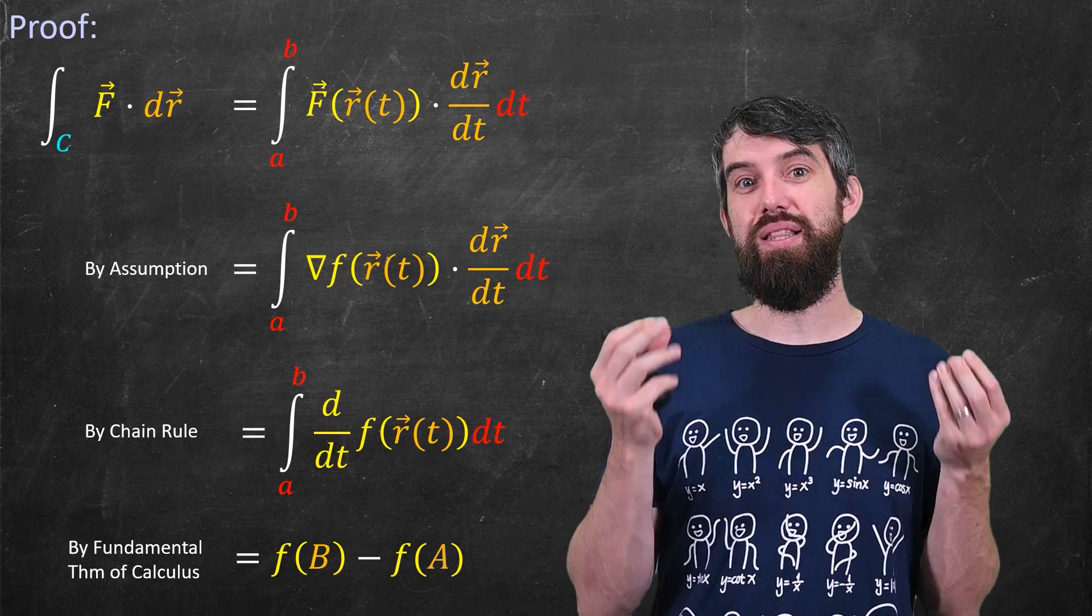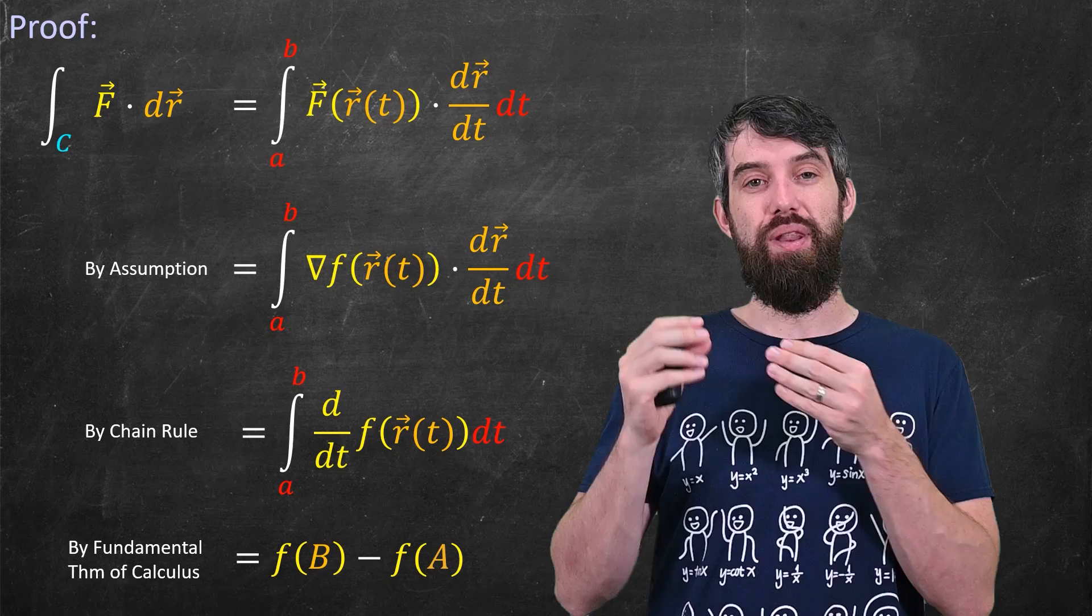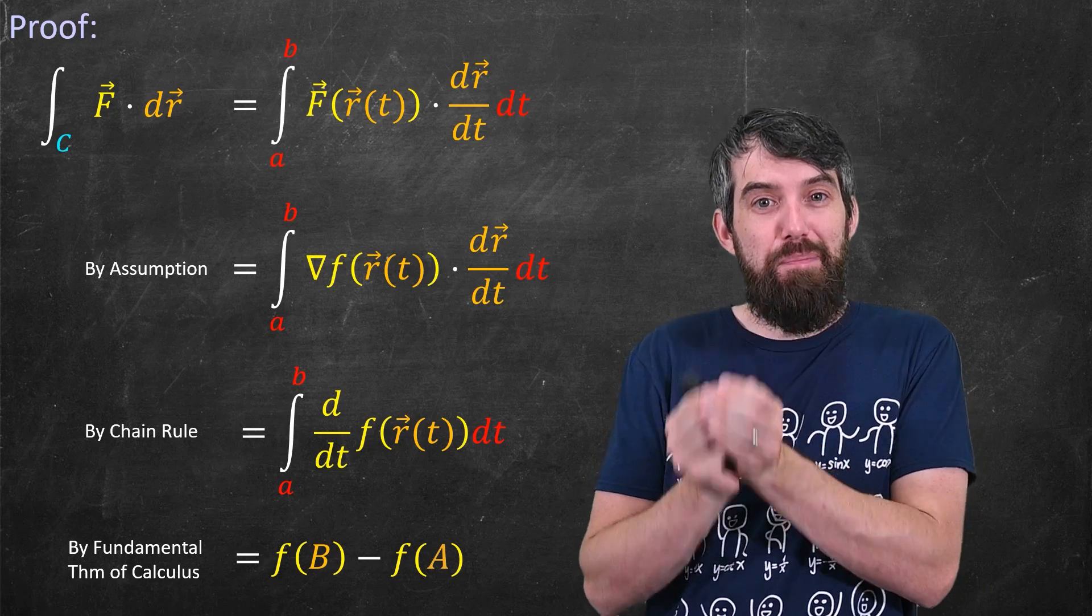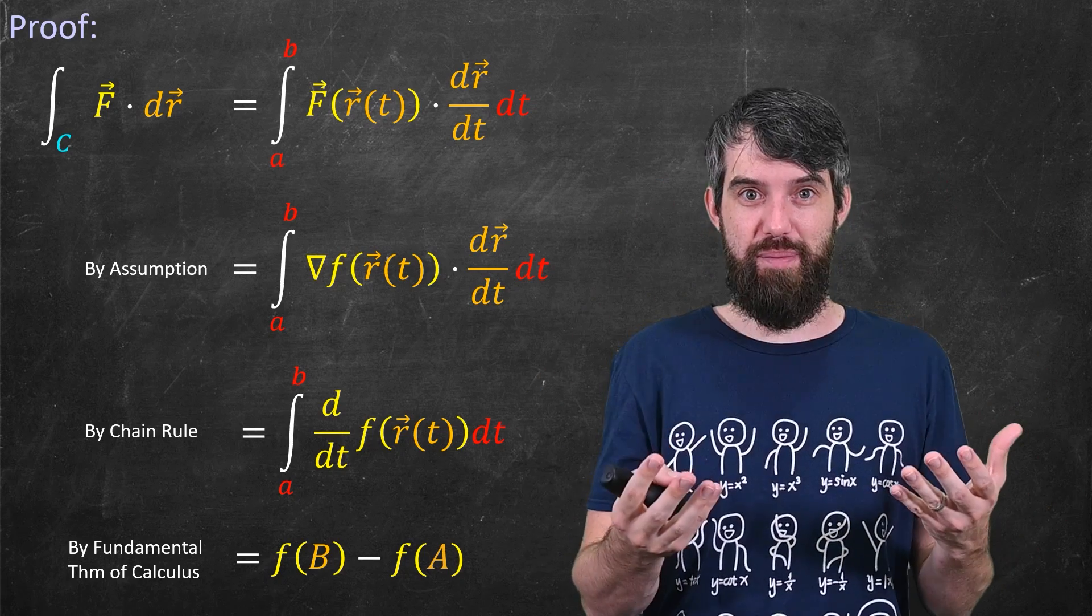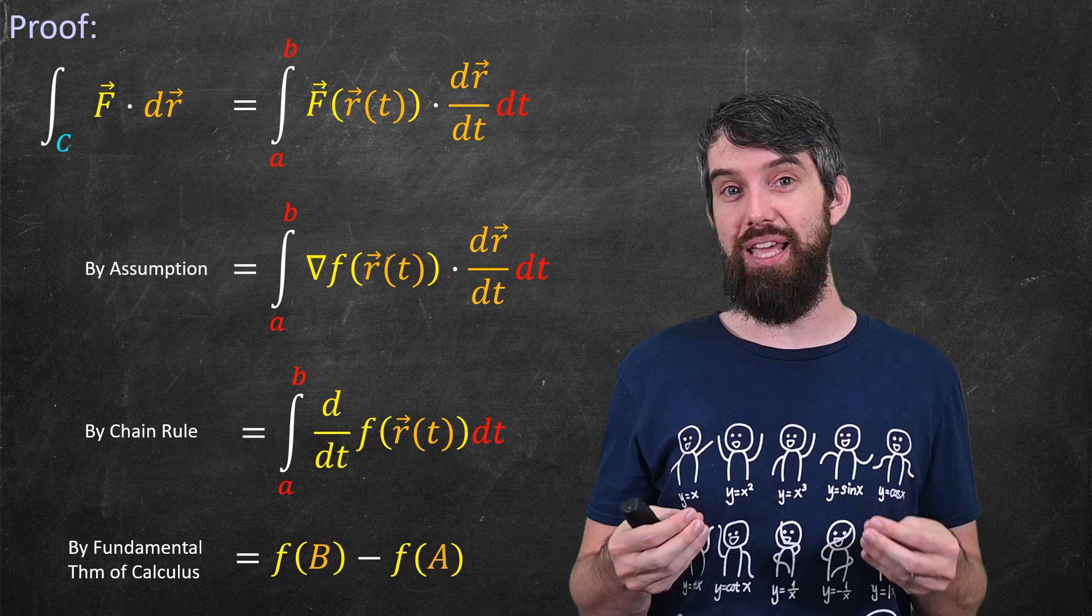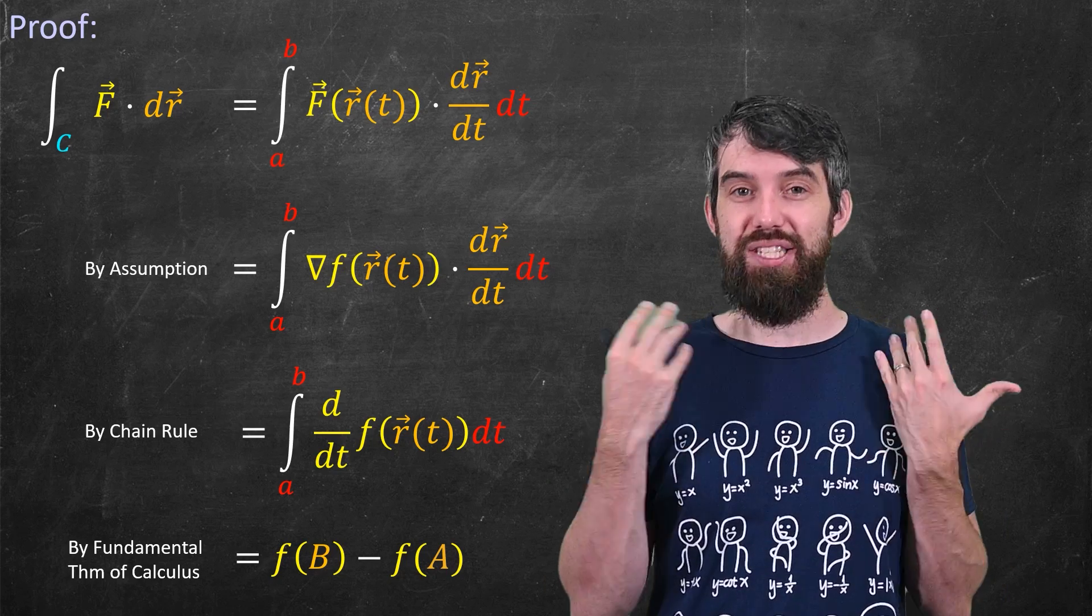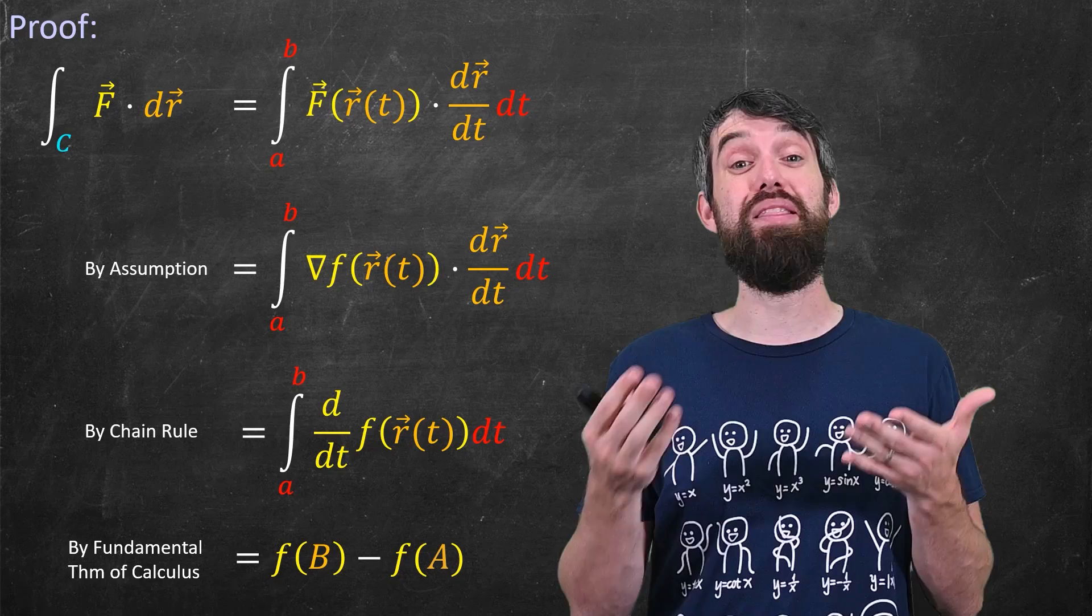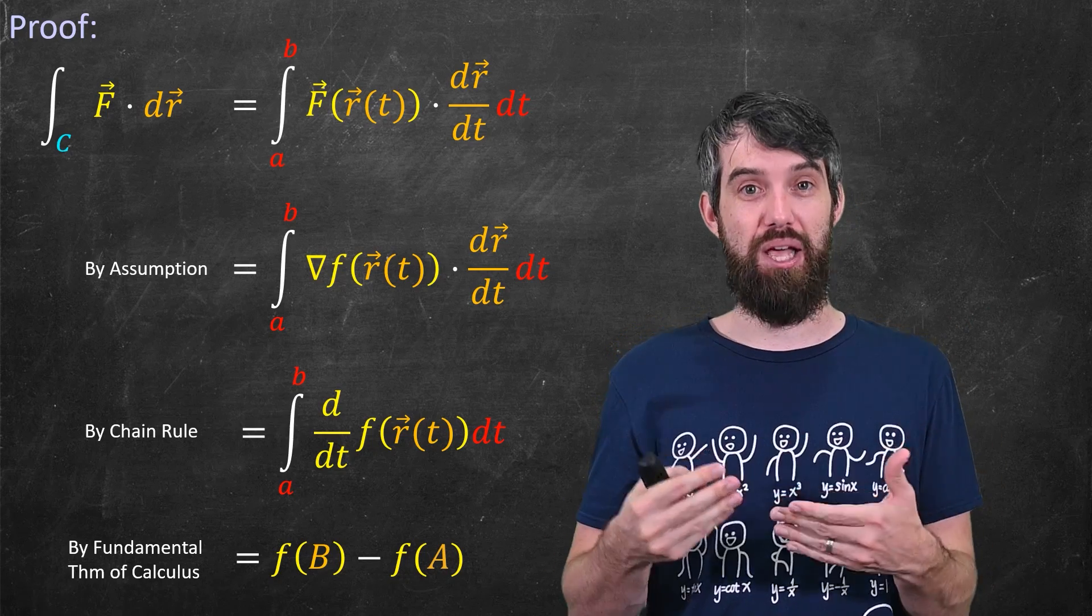And I think what's core here is that this proof is just some basic manipulation like the chain rule. But then it's just saying we have manipulated it so that we can apply the fundamental theorem of calculus, the original fundamental theorem, and then that is immediately given this generalization to the fundamental theorem of line integrals. So when I say it's a generalization I don't just mean that the formulas look similar, I mean that it was integral in the proof that we use the fundamental theorem of calculus.